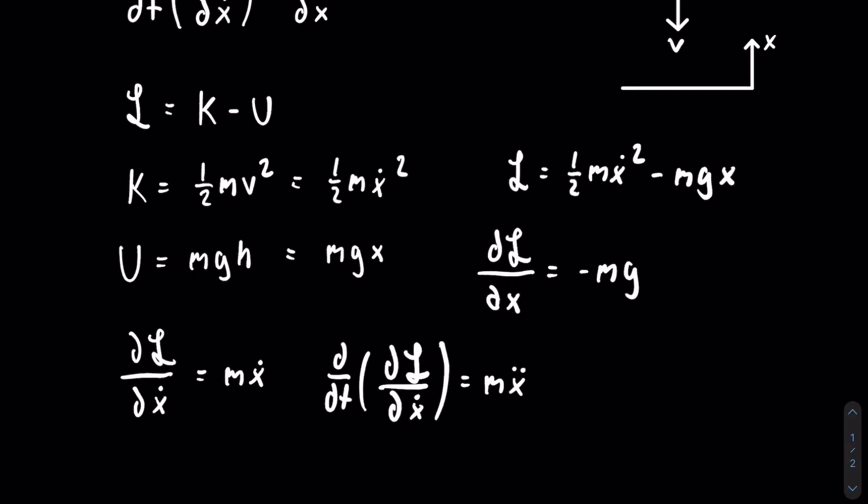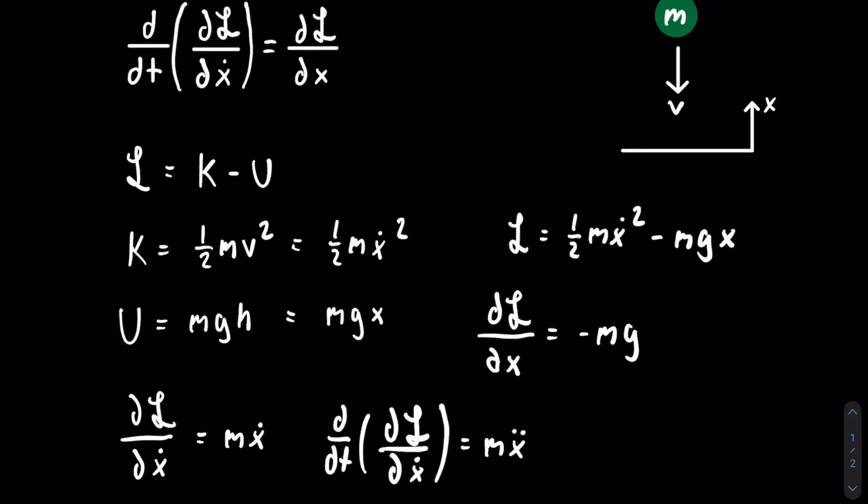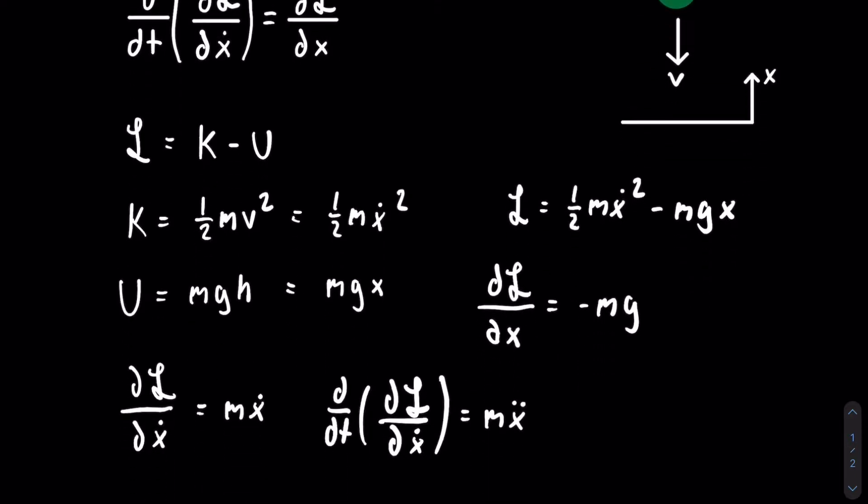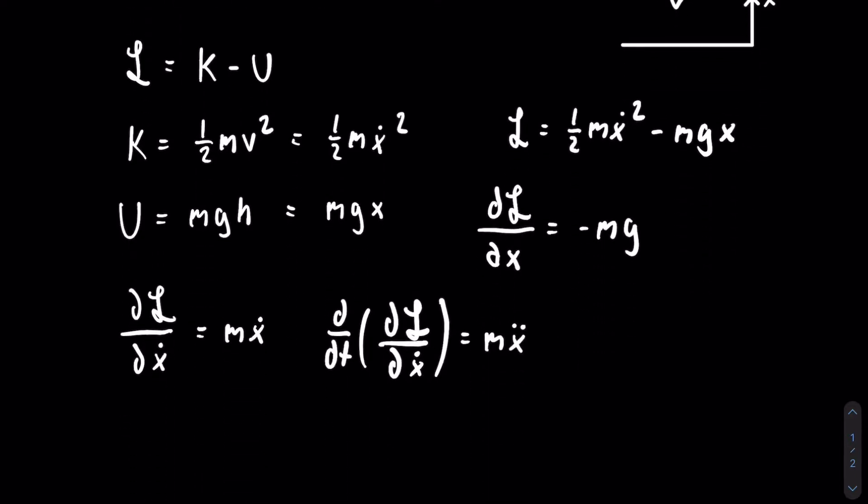Now we can go back to our equation and we can equate the necessary terms. And then we will get that m x double dot is equal to negative m g. Dividing both sides by m, we get that x double dot is equal to negative g. x double dot is just the second time derivative of the position, which is just the acceleration. So we get that a is equal to negative g.